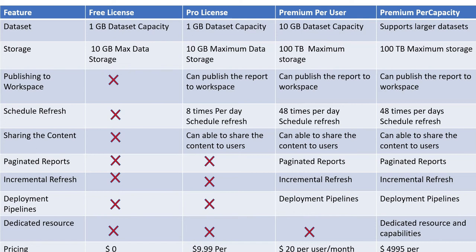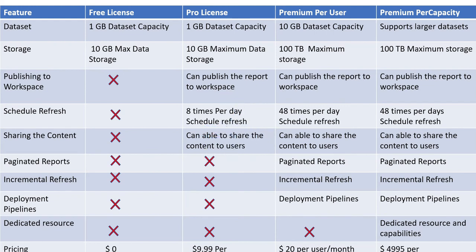With Deployment Pipelines you can move the same features across environments — Dev to UAT to Prod. This feature is available in Premium. Premium Per Capacity also provides dedicated resources for your organization. Premium Capacity is completely cloud-based, a Platform as a Service concept. Most large companies use Premium Per Capacity, while many use Premium Per User.